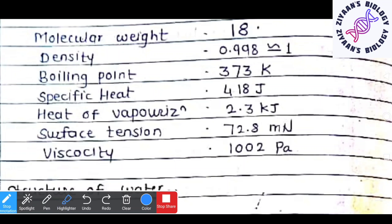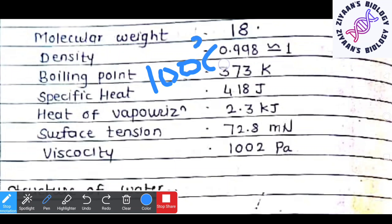The density of the water molecule is almost equal to 1. The boiling point of water is 100 degrees Celsius, or 373 Kelvin — because 0 degrees Celsius equals 273 Kelvin. The specific heat is the amount of heat required to increase the temperature of a body by 1 degree, and for water it is 418 kilojoules.